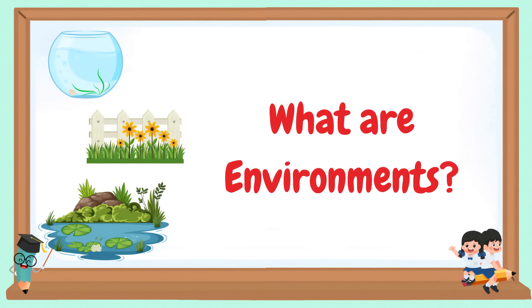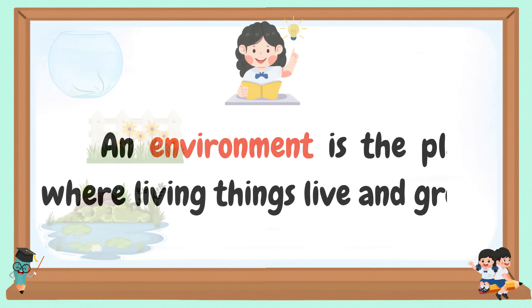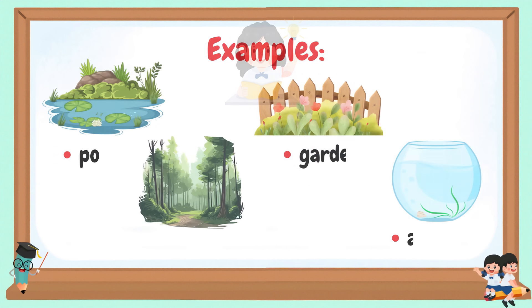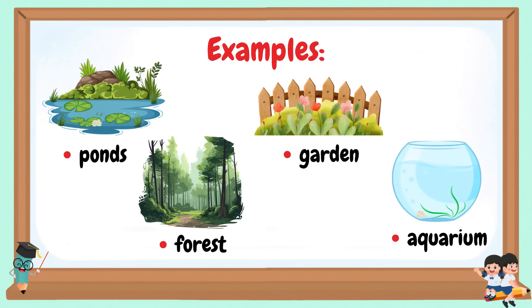What are environments? An environment is the place where living things live and grow. Examples: ponds, forest, garden, and aquarium.